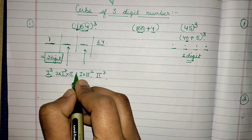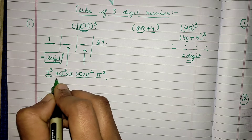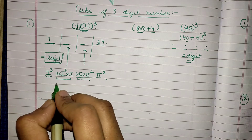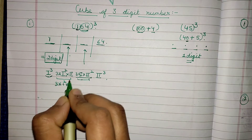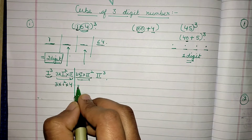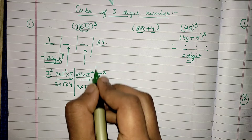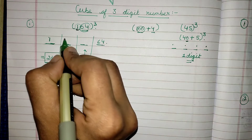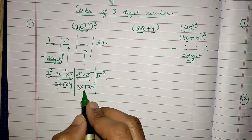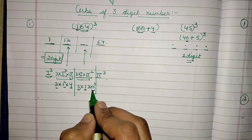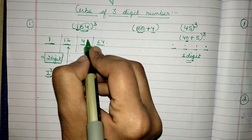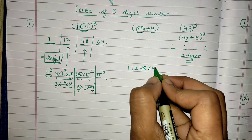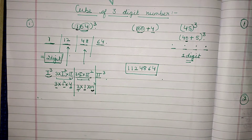While finding the cube of a three-digit number, we multiply these middle results by three. So I get: 3 × 1² × 4 = 12, and 3 × 1 × 4² = 3 × 16 = 48. So my four parts are: 1, 12, 48, 64 — giving the answer 1, 12, 48, 64.